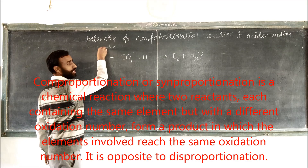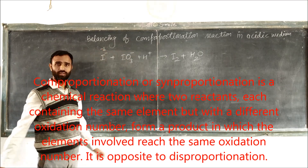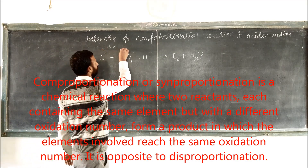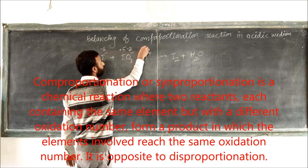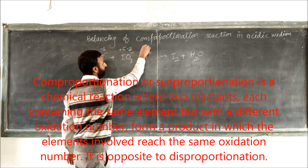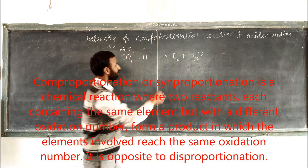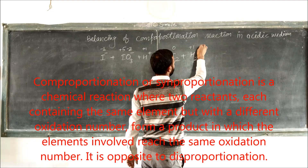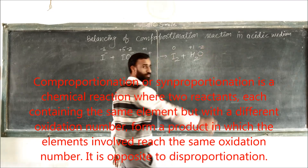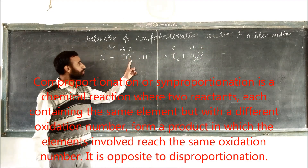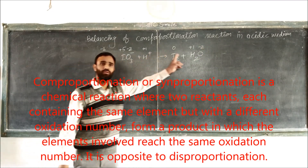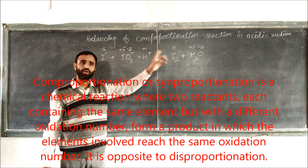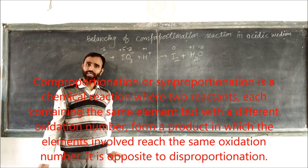The oxidation numbers are: minus 2, minus 1, plus 5, minus 1, zero, plus 1, minus 2. The oxidation number of oxygen is the same on both sides, and hydrogen is the same on both sides.